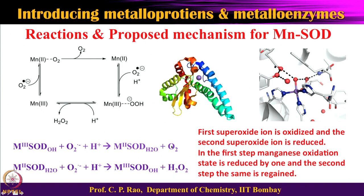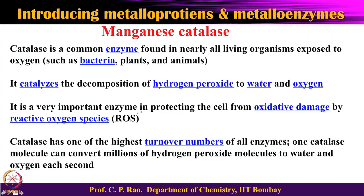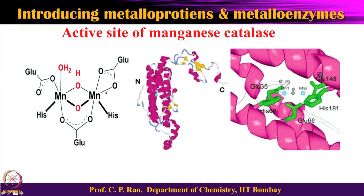The SOD enzyme generates O2 and H2O2. O2 is harmless, but H2O2 must be taken care of. This is handled by the enzyme catalase — manganese catalase — which also relieves oxidative stress by neutralizing ROS. The catalase has a very high turnover and converts H2O2 into water and O2, both harmless. Manganese superoxide dismutase has a mononuclear manganese center, whereas manganese catalase has a dinuclear manganese center.